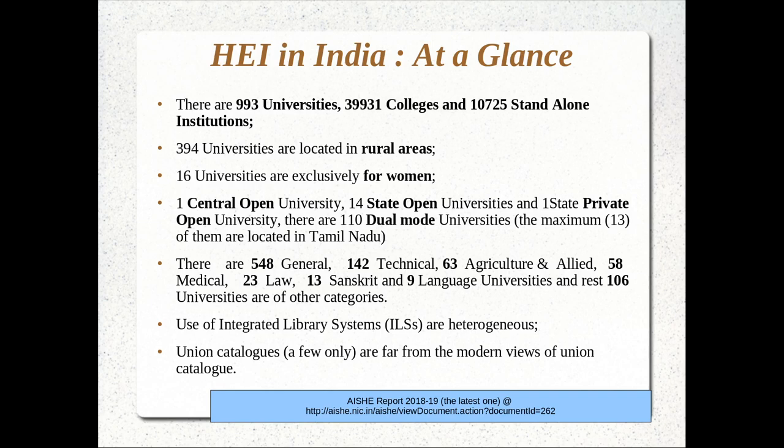Looking inside the higher education system of India, it is one of the biggest in the world — around 1,000 universities, 40,000 colleges, 10,000 plus standalone institutions, and many universities are located in rural areas, almost one-third. When it comes to library automation of these universities and academic libraries, it is heterogeneous in nature. We have union catalogs, but only a few, and these are far from the modern views of union catalog as discussed.